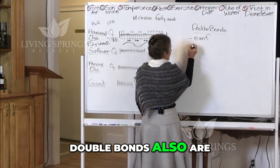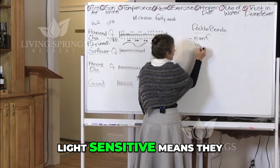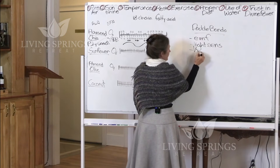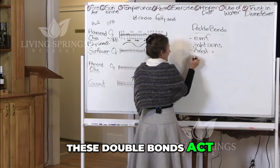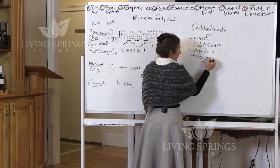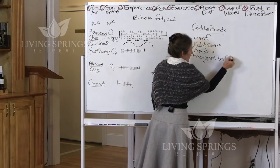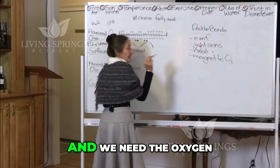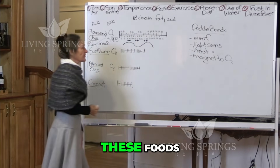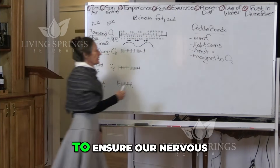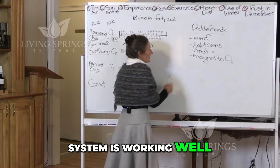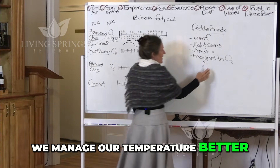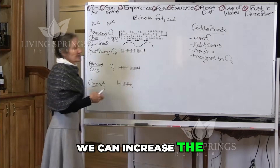Double bonds are also light sensitive — light sensitive means they attract the light. These double bonds are heat sensitive, and these double bonds act like a magnet to oxygen. We need the light, we need the heat, and we need the oxygen. So when we eat these foods, it allows us to ensure our nervous system is working well. We can absorb more vitamin D, manage our energy, manage our temperature better, and increase the oxygen in our body.